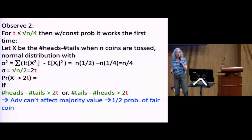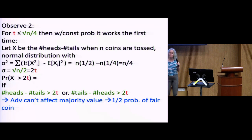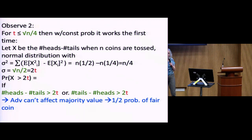If there were only square root N bad guys, there's no real problem — flipping N coins very often gives a square root N deviance in heads versus tails. If the number of heads versus tails exceeds the number of bad guys by a factor of about 2 times the bad guys, the bad guys can't meaningfully affect the vote. So this is essentially a constant-time algorithm when there aren't that many bad guys.